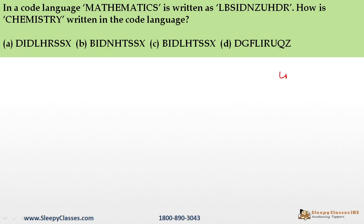The next question is on logical reasoning — coding and decoding. This is from CSAT 2021. In a code language, MATHEMATICS is written as LBSIDNZUHDR. How is CHEMISTRY written in the code language? In coding and decoding problems, first find the relationship between the original word and its code, then apply that same relationship to the new word.